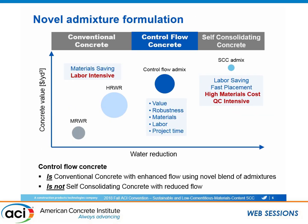What the team has been working on is this novel admixture formulation. What I show here is kind of an evolution of the admixtures — the polycarboxylates and superplasticizers we've been dealing with. The y-axis shows the concrete value to the contractor and producer, and the x-axis is water reduction. As we've developed newer admixtures, we're trying to give more value to the concrete in different ways. With traditional mid-range and high-range water reducers, you get material savings — you can take out cement and still get the same flowability — but it's still labor intensive. When you go all the way to SCC, you start to get labor savings and fast placement, but you also get higher costs with the high powder content.